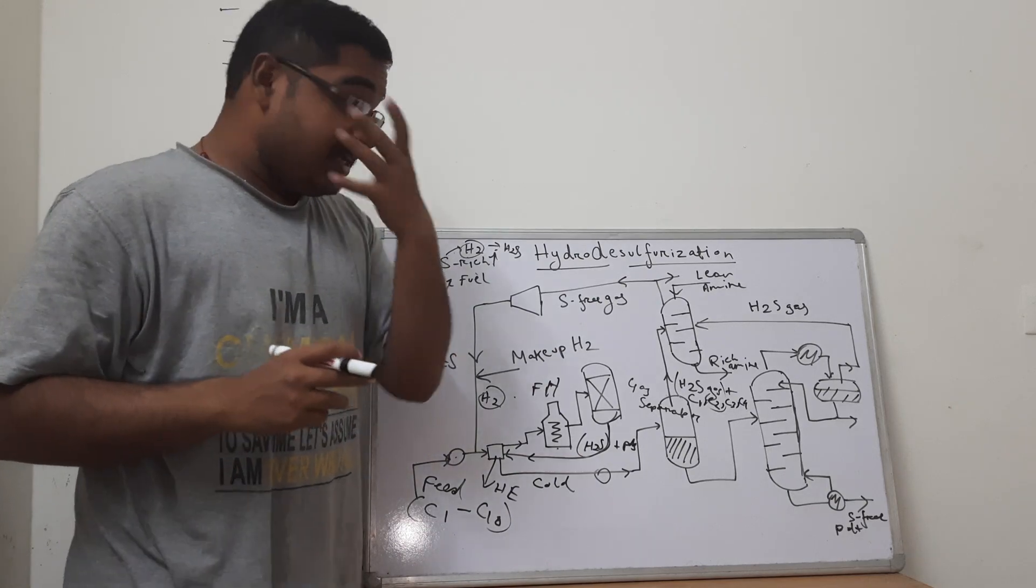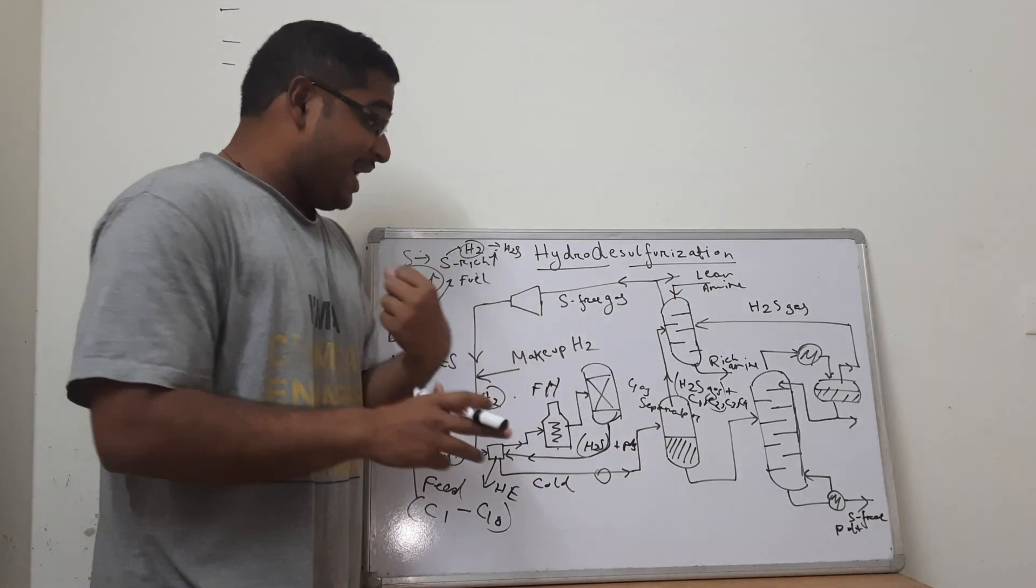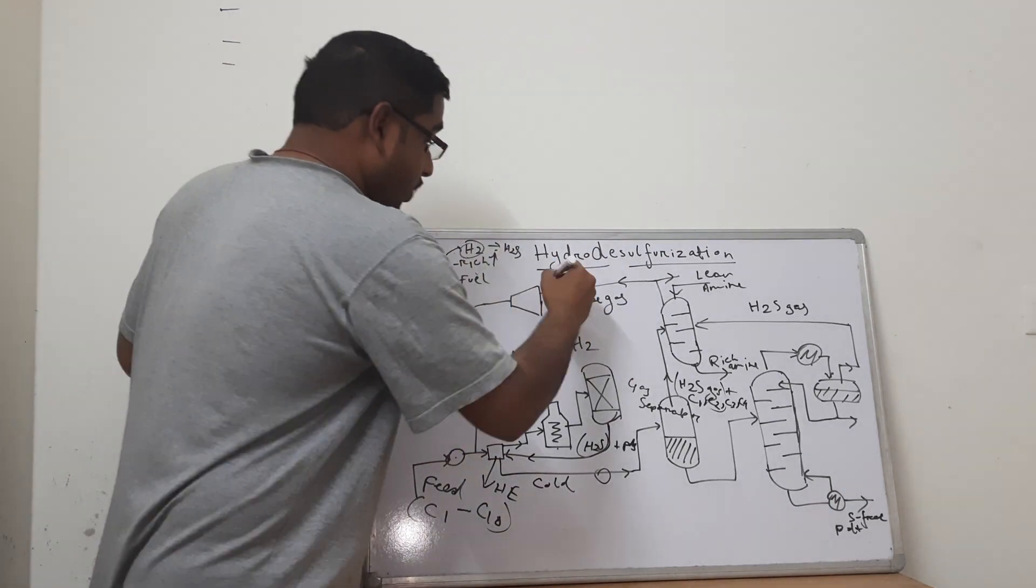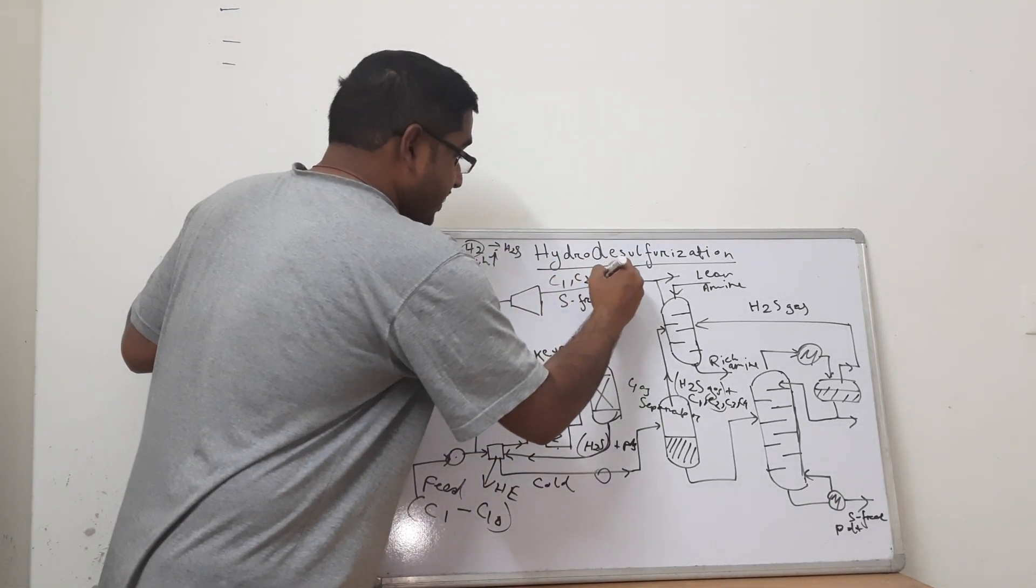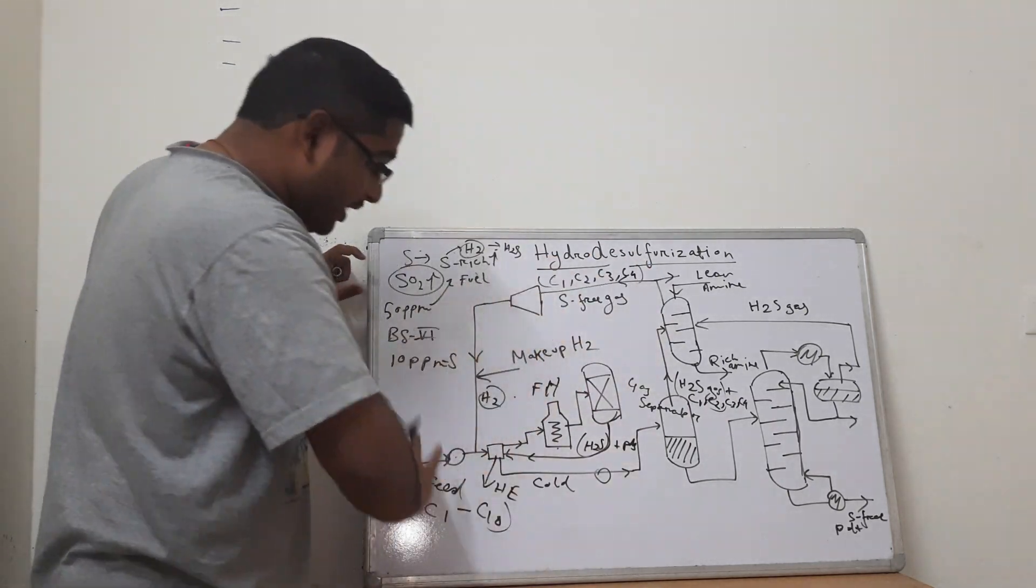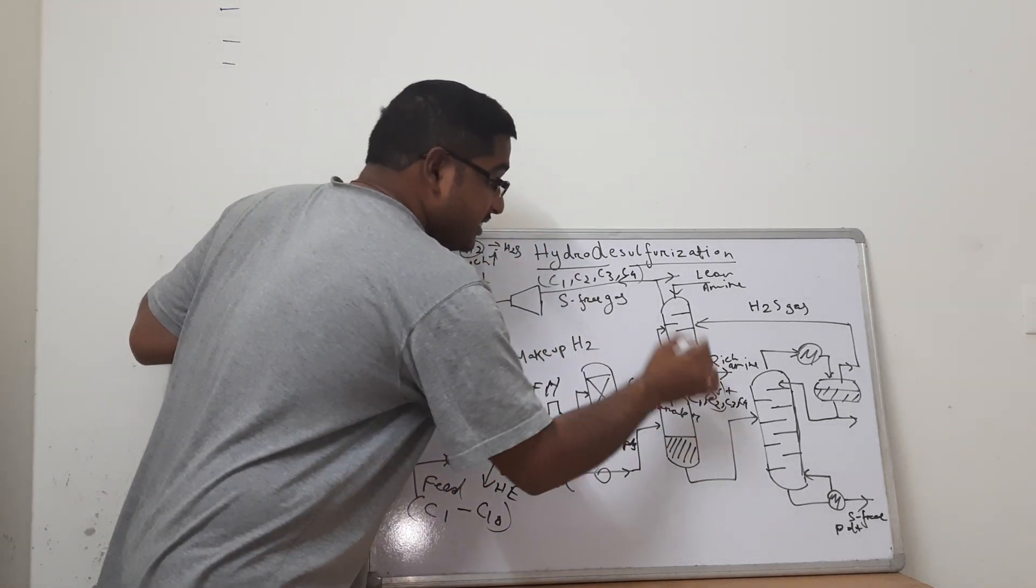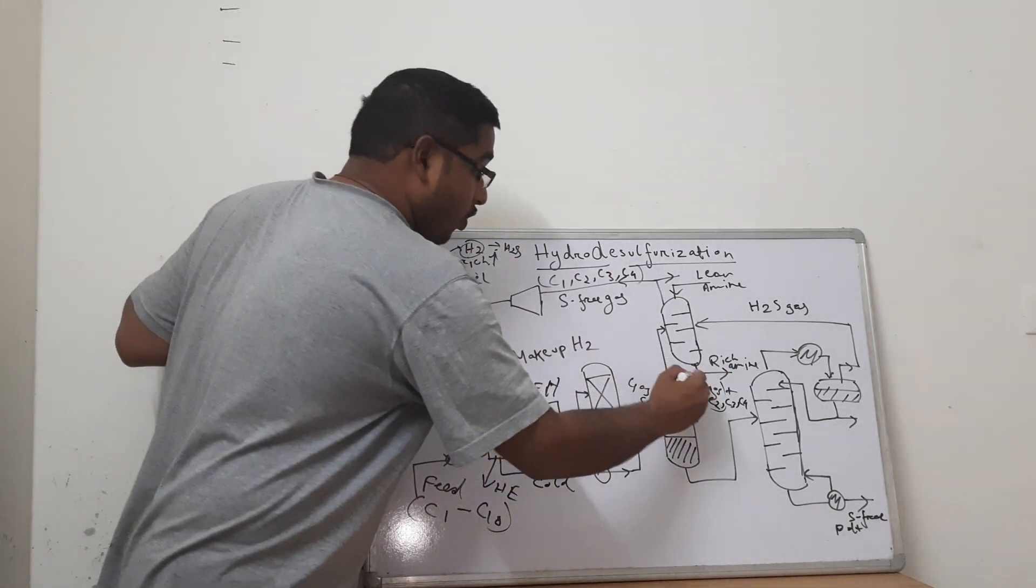So amine is basically being used to consume up this H2S gas from the system and let alone C1, C2, C3, C4 that escapes out. And this C1, C2, C3, C4 is being recycled back into the system. And primarily this rich amine is trapping the sulfur and letting go of the H2.